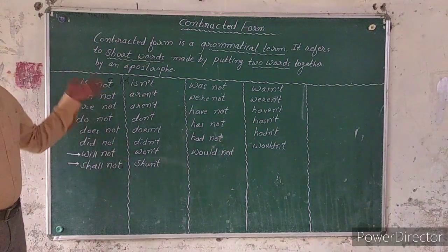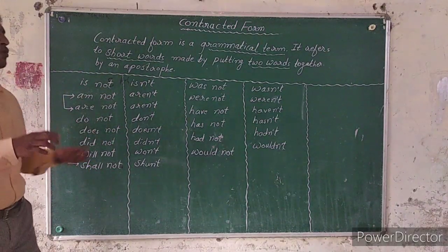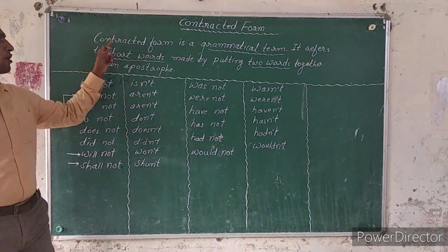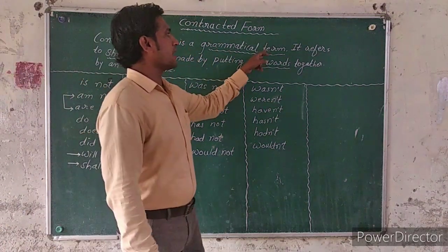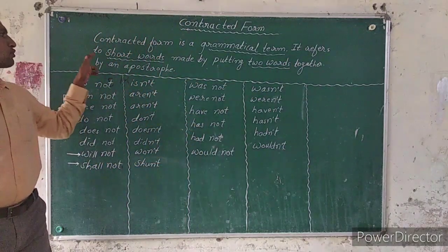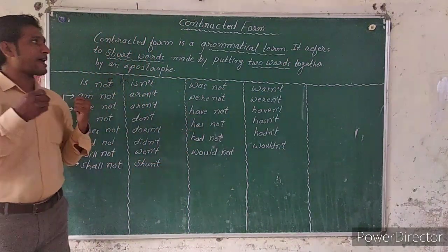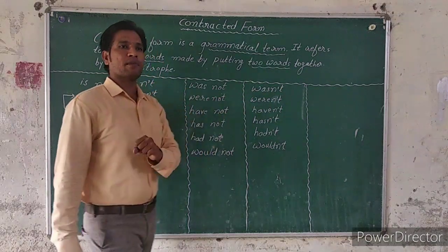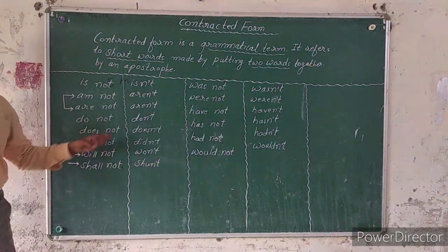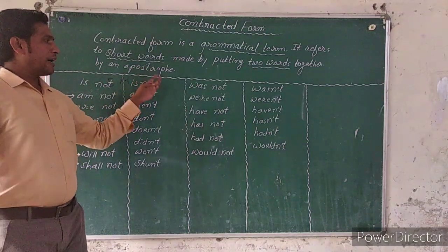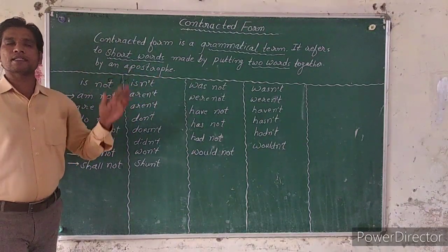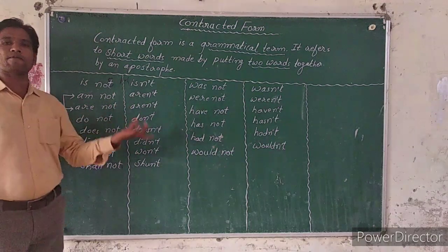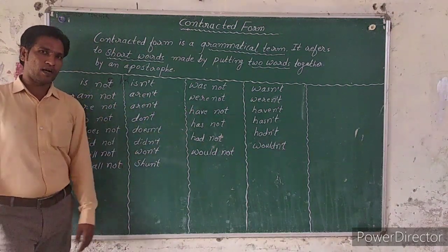Let us revise once more. Contracted form refers to when we take two separate words and join them together to create a short form. The definition: contracted form is a grammatical term — it refers to short words made by putting two words together with an apostrophe. These are the examples of contracted form. Next, we will study question tags, so please revise this. Thank you very much.